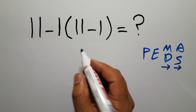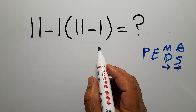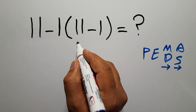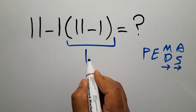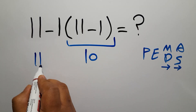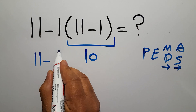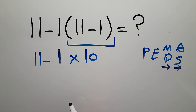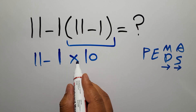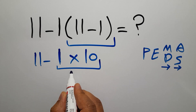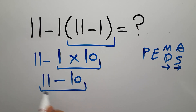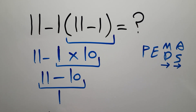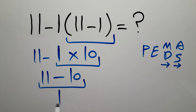First, inside the parentheses we have 11 minus 1, which equals 10. So we have 1 times 10, which gives us 10. Then 11 minus 10 equals 1. Therefore, our final answer to this problem is 1.